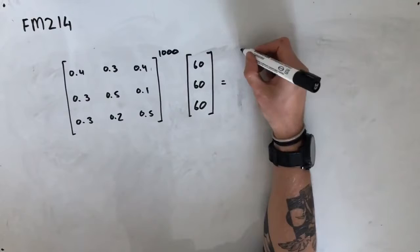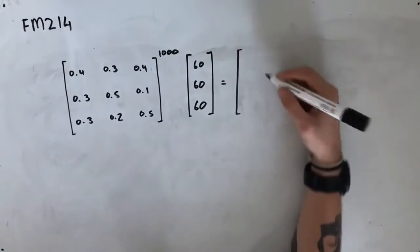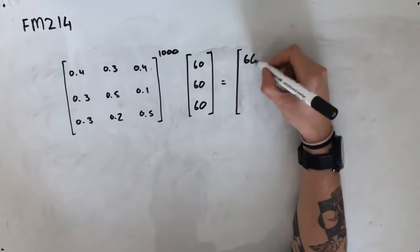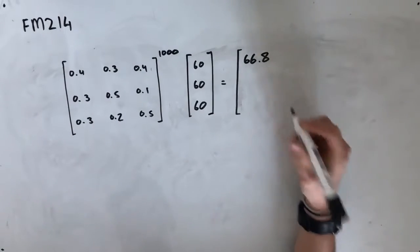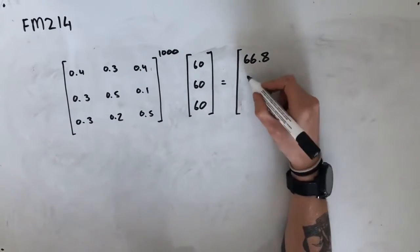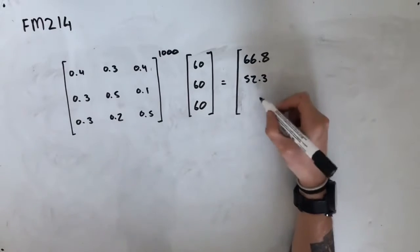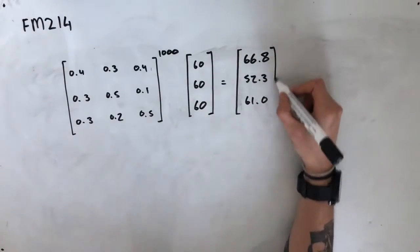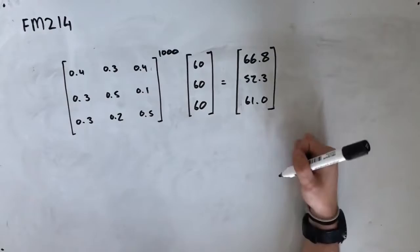We're going to plug that into a calculator, and we should get an answer — I've rounded each value to one decimal place — along the lines of 66.8, 52.3, and 61.0. And that is our steady state.